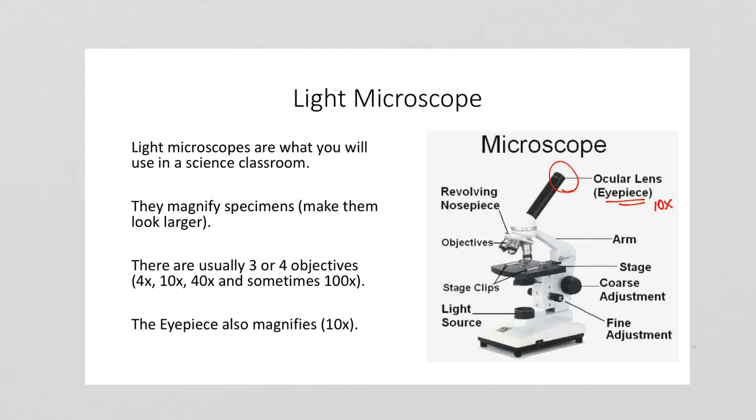The specimen, either on a slide or something else, sits on the stage, which is this part of the microscope. You've got stage clips which you put the slide underneath to hold it in place. The stage can be moved up and down by two dials on both sides of the microscope.